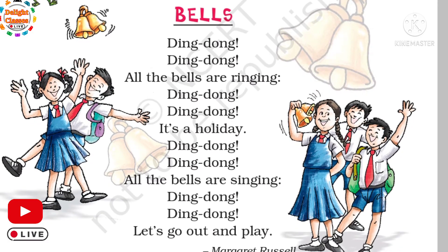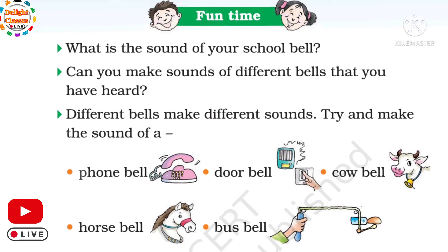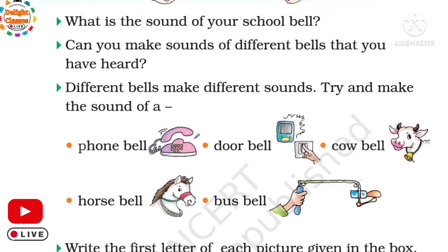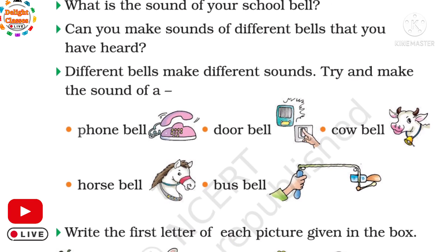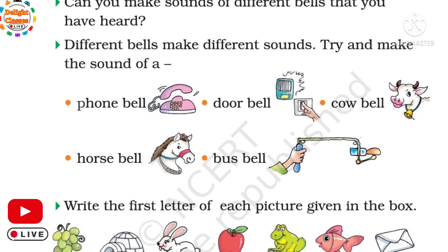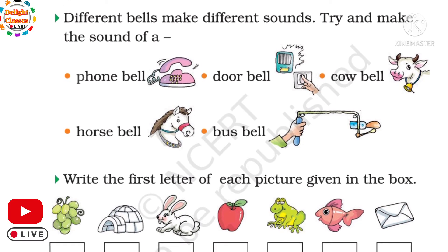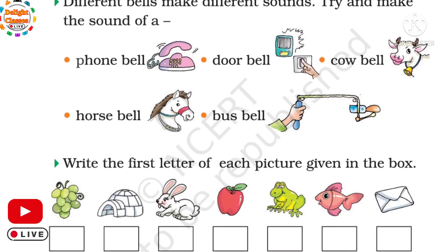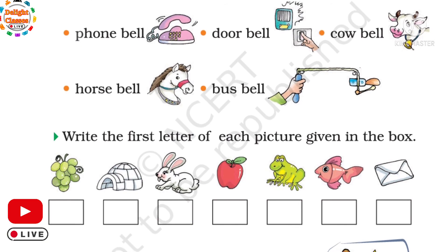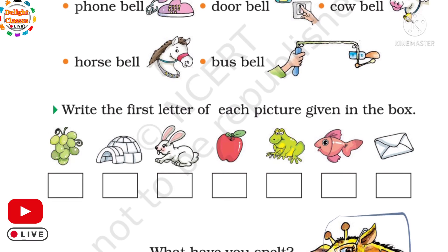Now page number 16. Write the first letter of each picture given in the box. First picture: grapes — write G. Second picture: igloo — write I. Third picture: rabbit — write R. Fourth picture: apple — write A. Fifth picture: frog — write F. Next picture: fish — write F. Last picture: envelope — write E.